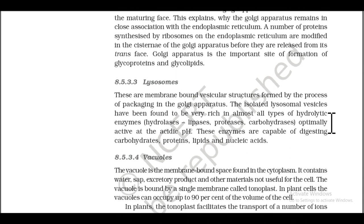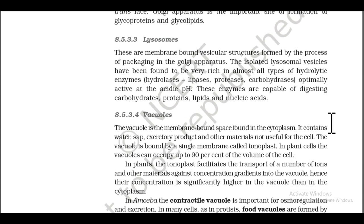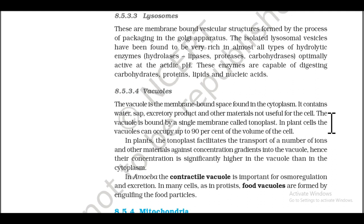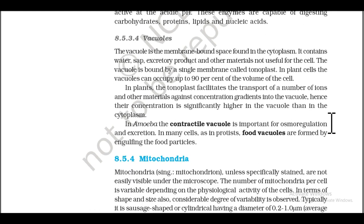The Golgi apparatus is the most important site for the formation of glycoproteins and glycolipids. Section 8.5.3.3: Lysosomes. These are membrane-bound vesicular structures formed by the process of packaging in the Golgi apparatus. The isolated lysosomal vesicles have been found to be very rich in almost all types of hydrolytic enzymes — lipases, proteases, and carbohydrases — optimally active at an acidic pH. These enzymes are capable of digesting carbohydrates, proteins, lipids, and nucleic acids.